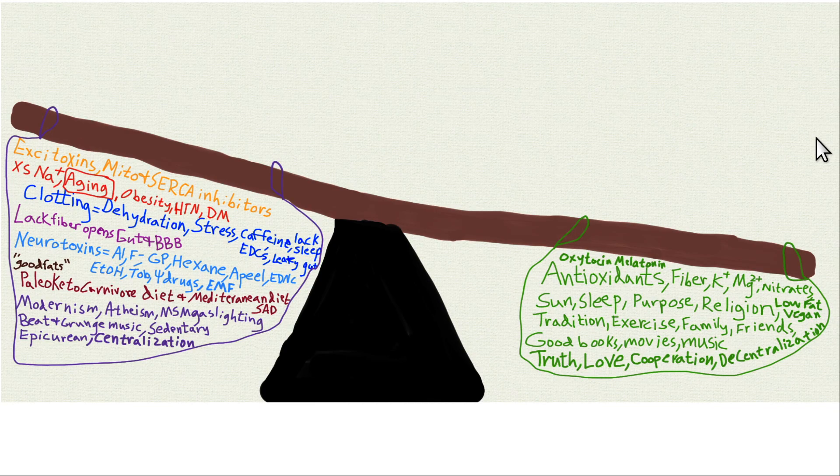But the key point I want to make out of this slide is that it's not one thing that causes dementia. It's always a bunch of things. Lots of people have 15, 20 things going on simultaneously, pushing them towards cognitive impairment.